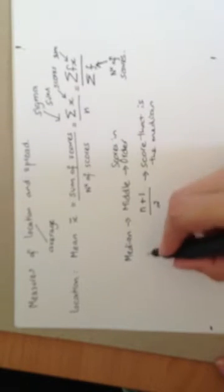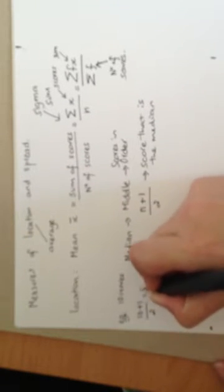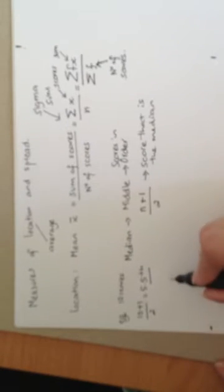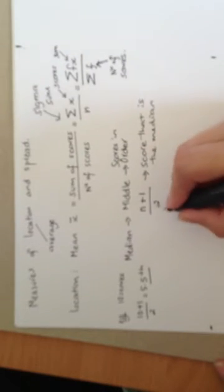So for example, if I had 10 scores, 10 plus 1 is 11, divided by 2 is 5.5. So it's the five and a half one that's in order, the 5.5 one that's in order from lowest to highest that would become my median. So I need to count from the first one along and then that one becomes my median.